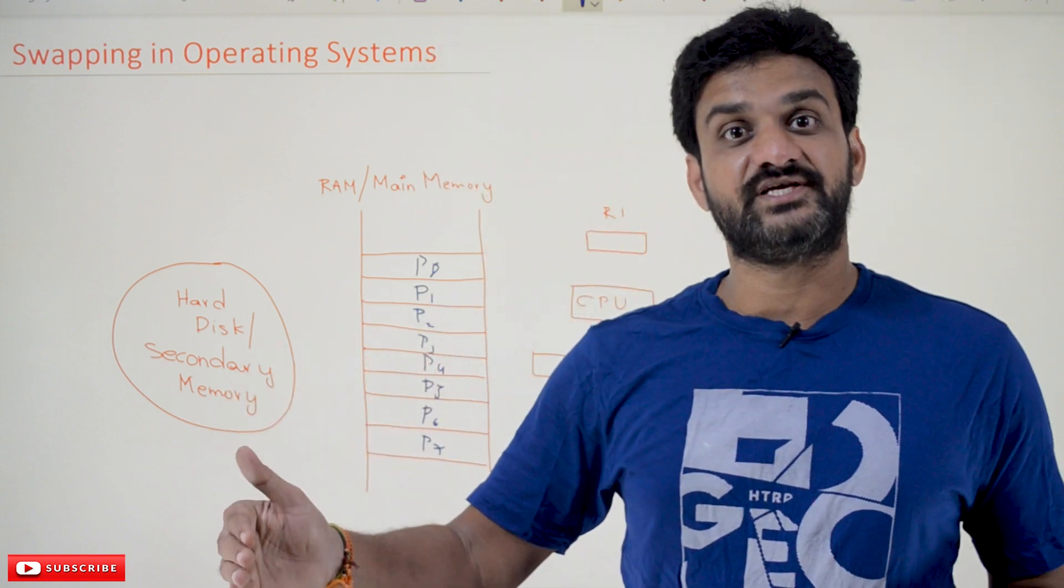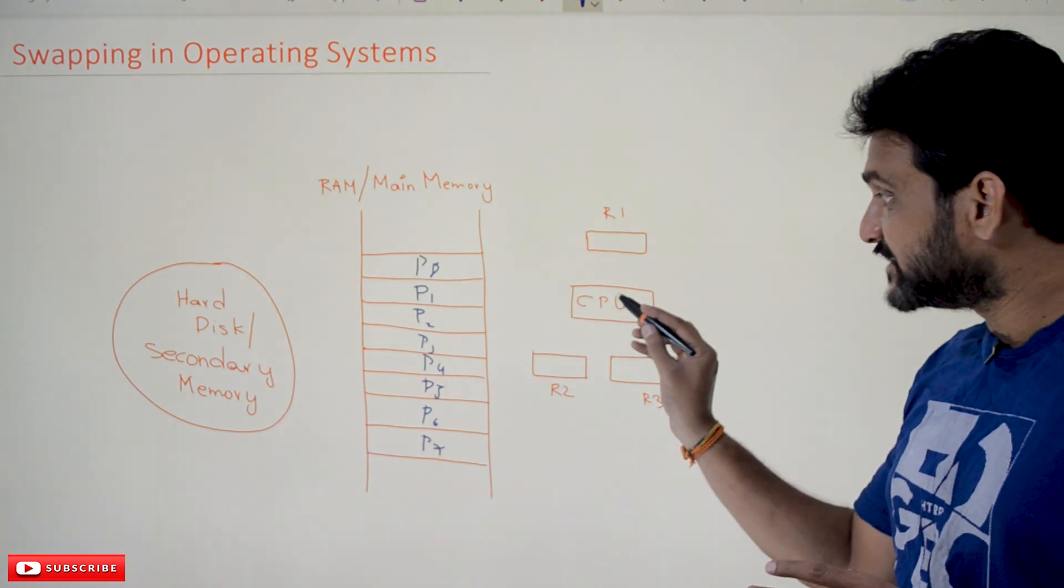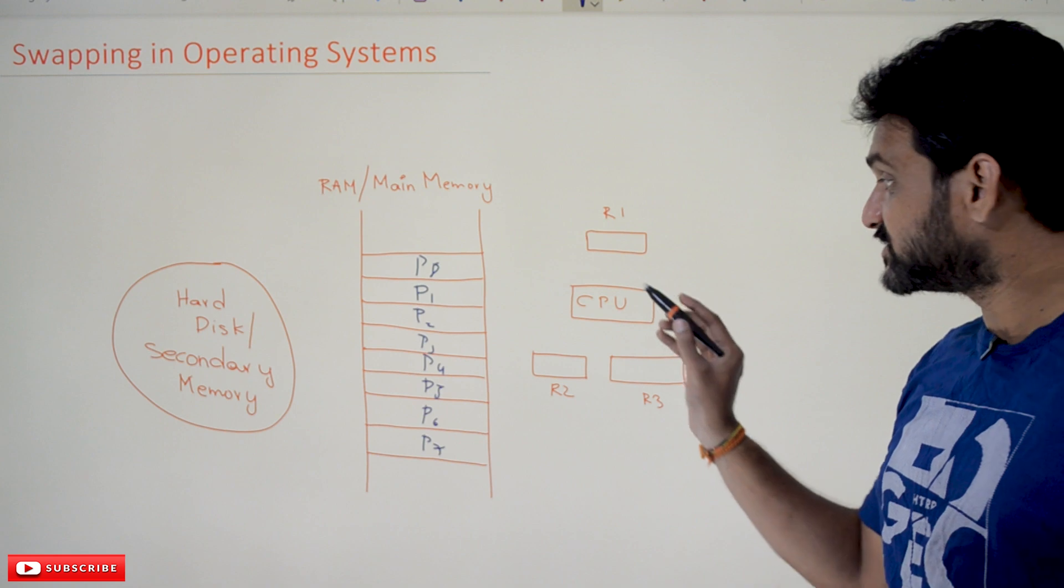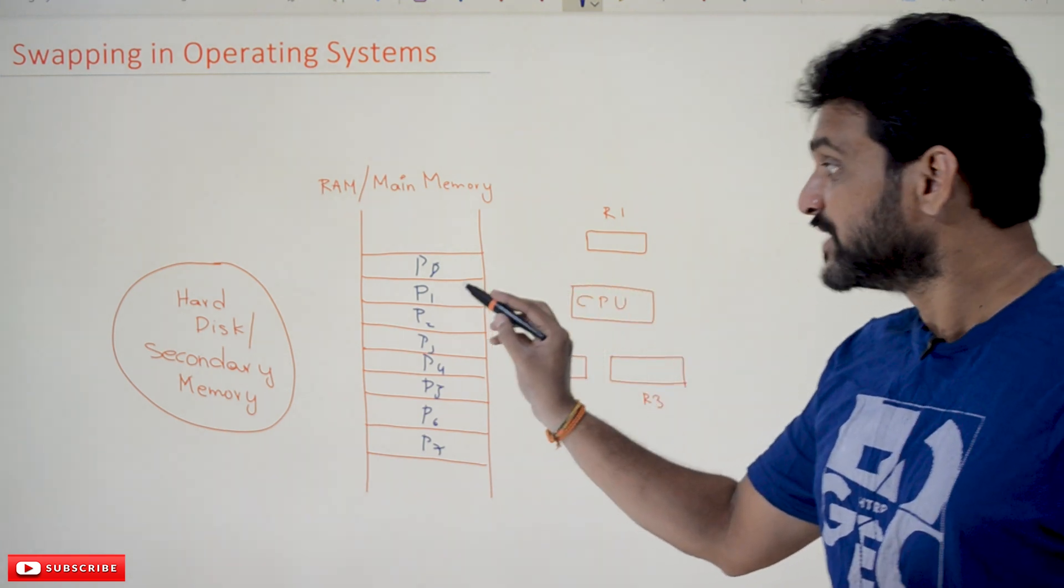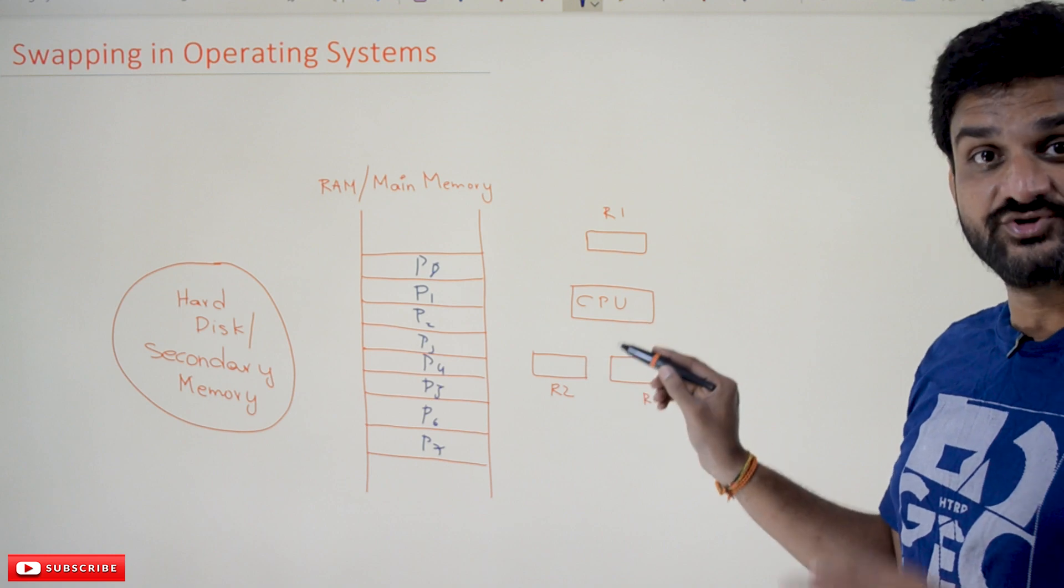In our previous class, we discussed context switching. We said that, for example, if a process in running state switches to ready state and a process in ready state switches to running state, that's what we call context switching.